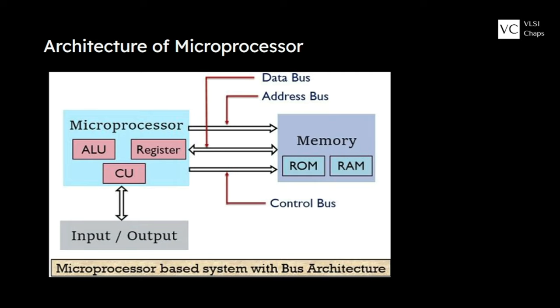Once the control unit has done its job, the arithmetic and logic unit comes into the picture. The control unit controls the transfer of data and instructions, while the arithmetic and logic unit performs the actual data processing. This processing includes operations like addition, subtraction, multiplication, division, and logical operations like AND, OR, NOT, and XOR. To perform all this data processing, there must be some temporary storage elements called registers, which store intermediate results while the ALU is working.